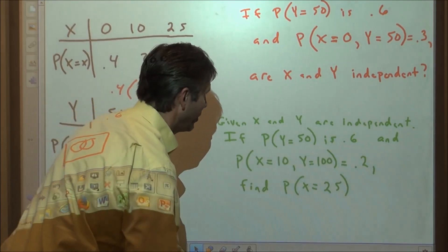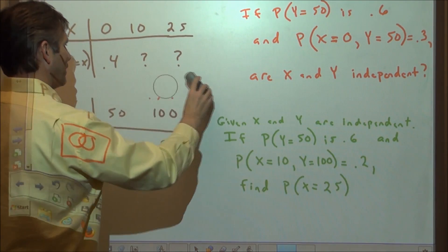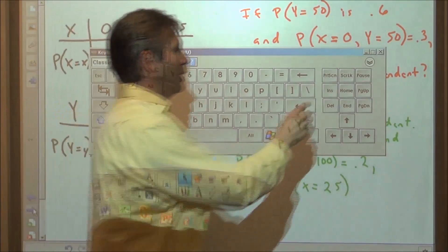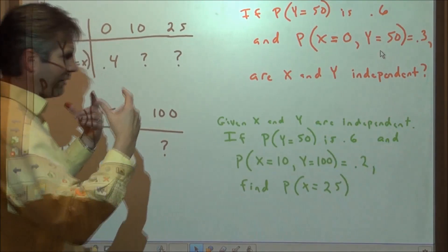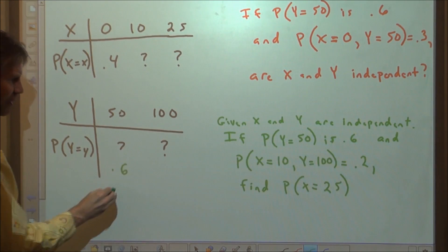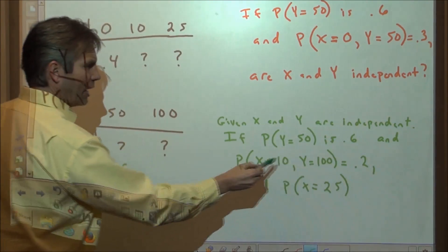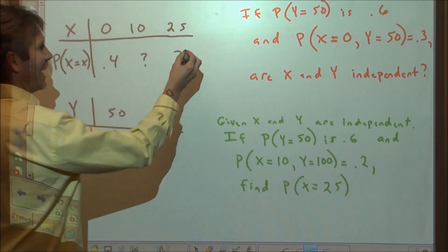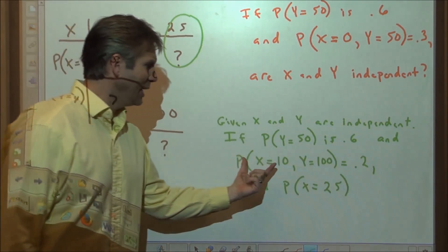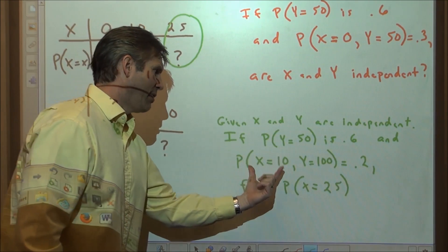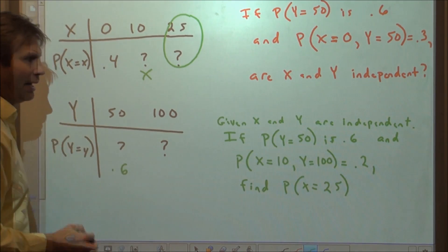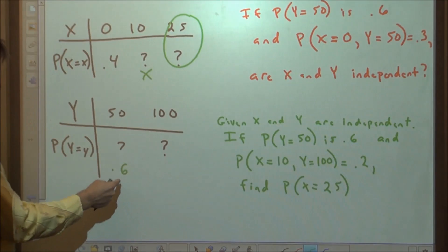Now for the second problem: we're told the two random variables are independent. Knowing that should immediately make us think we can multiply individual probabilities together for joint probabilities. We're given P(Y=50) = 0.6 and the joint probability P(X=10 and Y=100) = 0.2. We want to find P(X=10). Since the variables are independent, P(X=10) × P(Y=100) = 0.2.